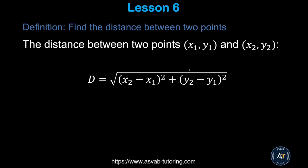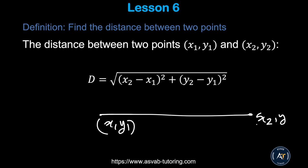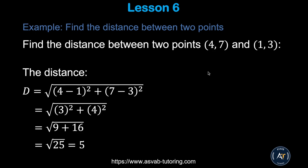Next, we'll find the distance between two points (x₁, y₁) and (x₂, y₂). The distance formula is: d = √[(x₂ − x₁)² + (y₂ − y₁)²]. Let's apply this to the problem: find the distance between (4, 7) and (1, 3). Label them x₁, y₁, x₂, y₂ and plug in.